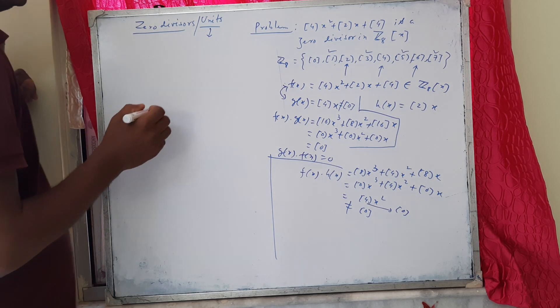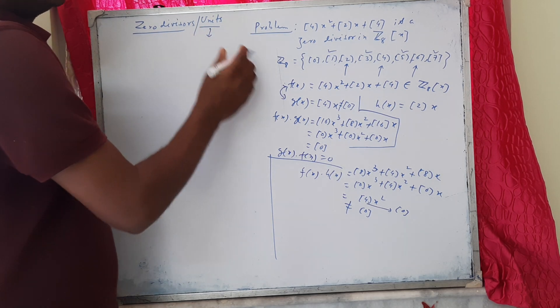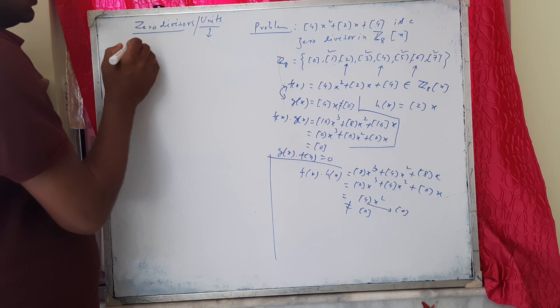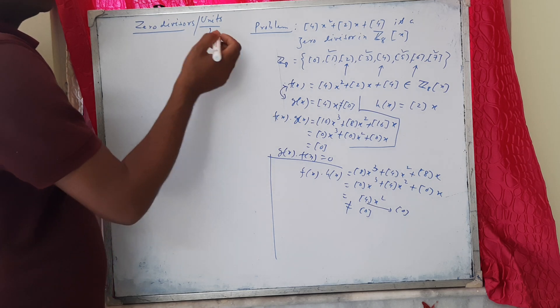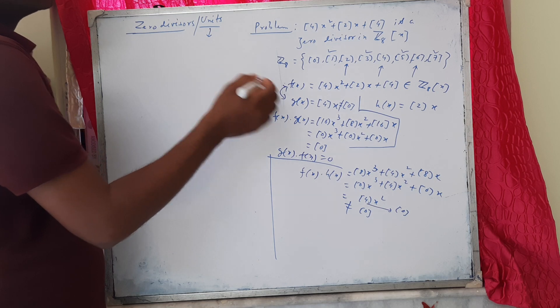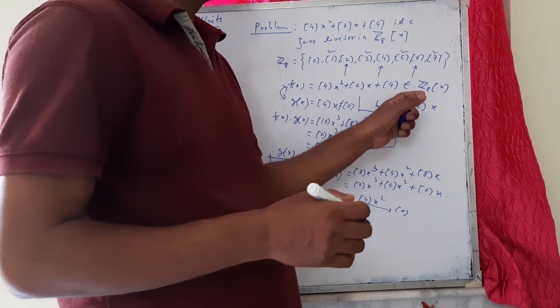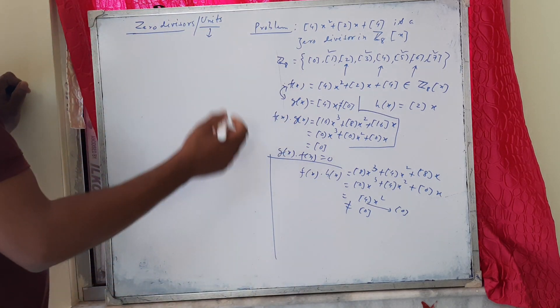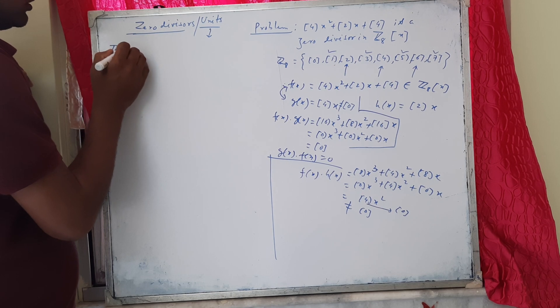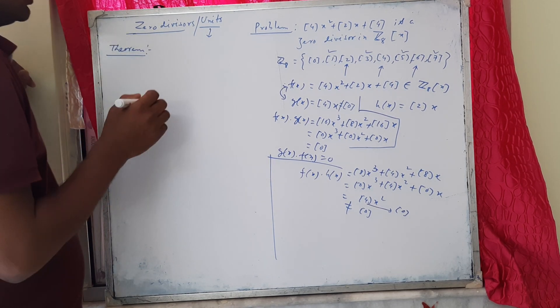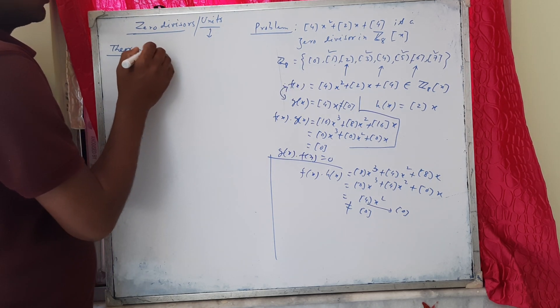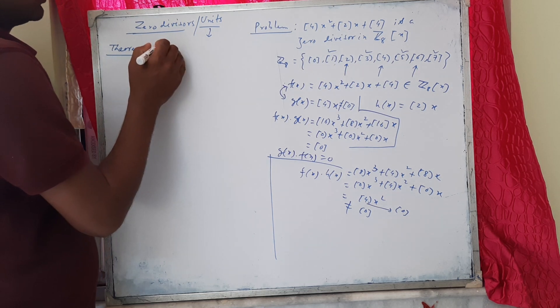Now, we will see about some units in Z[x]. We know about the definition of units in a ring. To find the units in Z[x], we need a theorem which we will state here, and we will use it to find units in this polynomial ring.